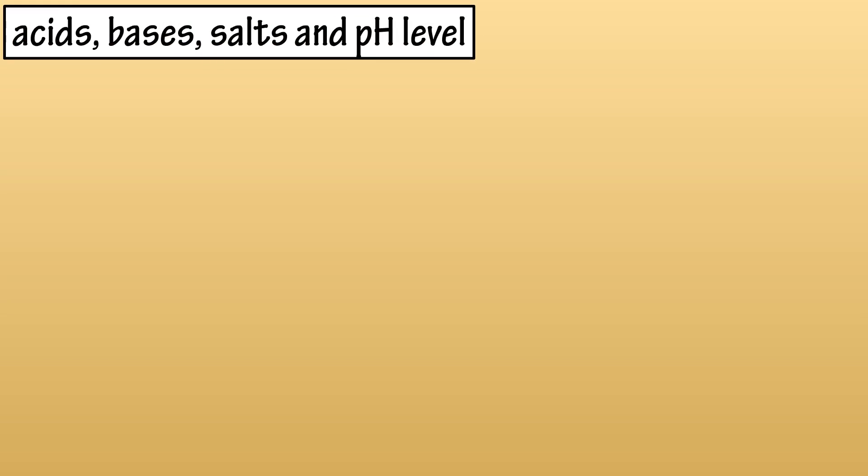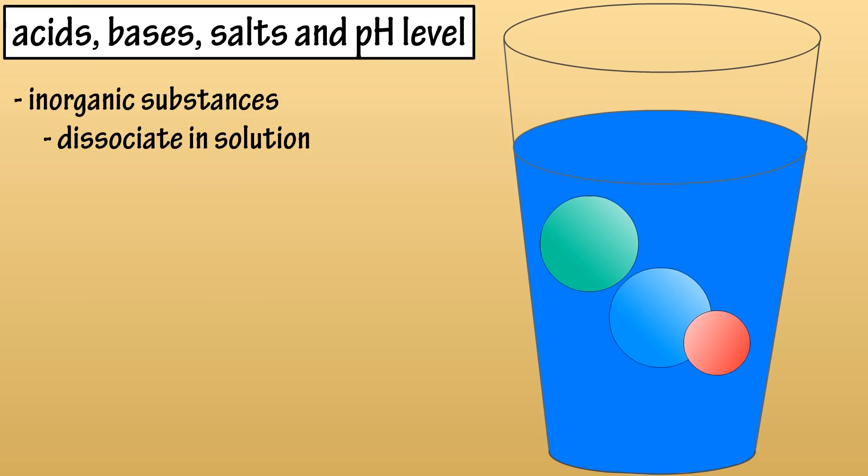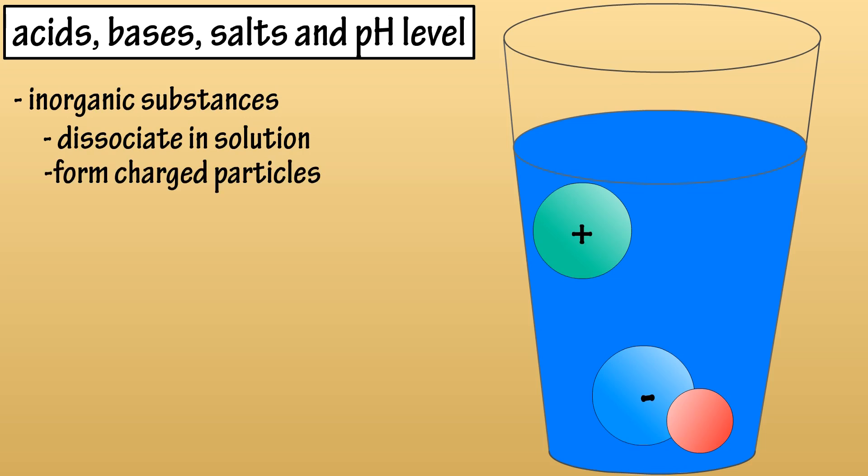Acids, bases, salts, and pH level. Acids, bases, and salts are inorganic substances that break up or disassociate in solution or water to form charged particles or ions. The positive ions are called cations and the negatively charged ions are called anions.